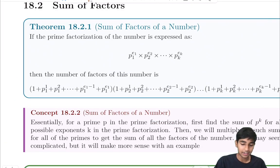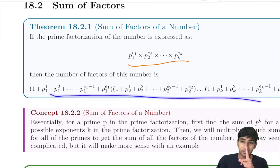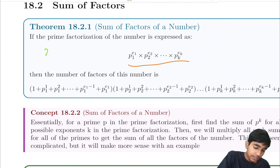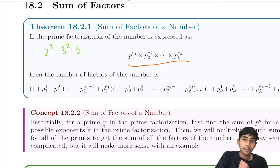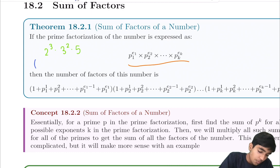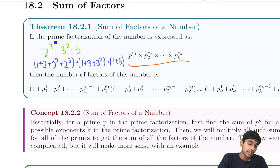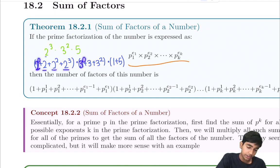Now we're on to sum of factors. If you have a number like 2 cubed times 3 squared times 5, to find the sum of its factors you do: (1 + 2 + 2² + 2³) times (1 + 3 + 3²) times (1 + 5). Essentially, for each prime you sum all its powers from the 0th up to its exponent, then multiply all those sums together.